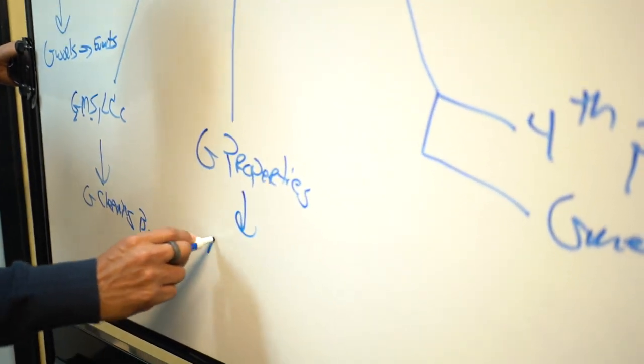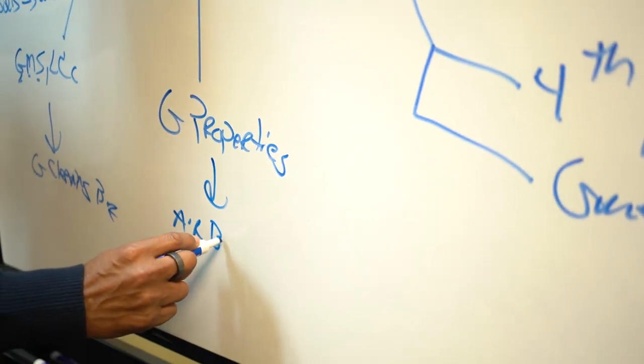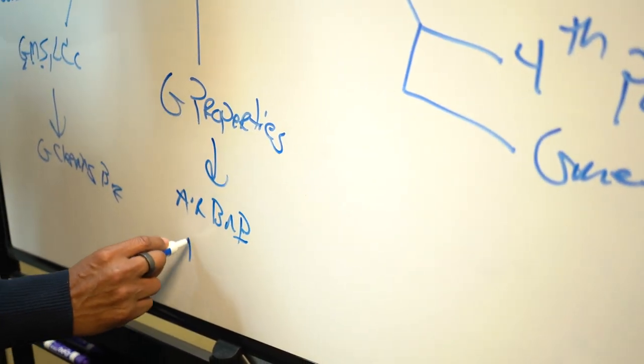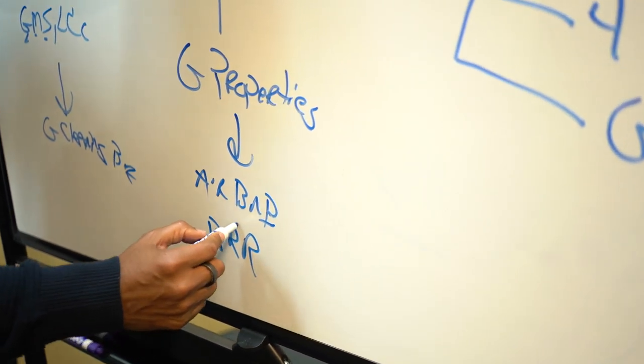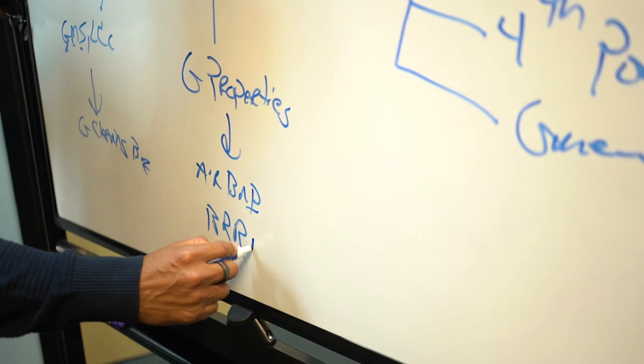This is Airbnb and the BRRRR: buy, rehab, refinance, rent.